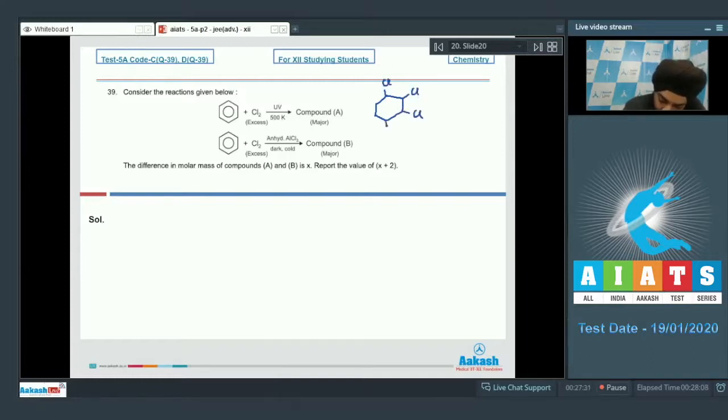So we're going to get the formation of this structure. If we talk about the second reaction now, benzene is allowed to react with chlorine in presence of anhydrous AlCl3 in the cold and dark atmosphere. This will give me this product.